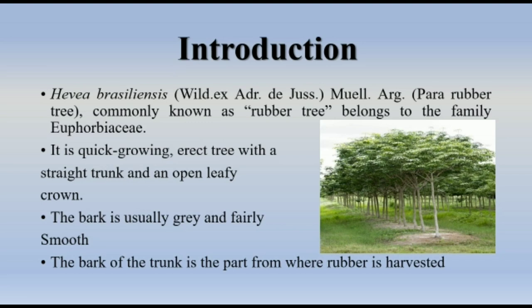Introduction: Hevea brasiliensis is commonly known as the rubber tree and belongs to family Euphorbiaceae. It is a quick-growing, erect tree with a straight trunk and an open leafy crown. The bark is usually gray and fairly smooth, and the bark of the trunk is the part from where rubber is harvested.